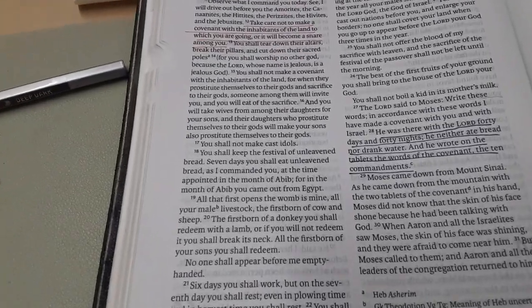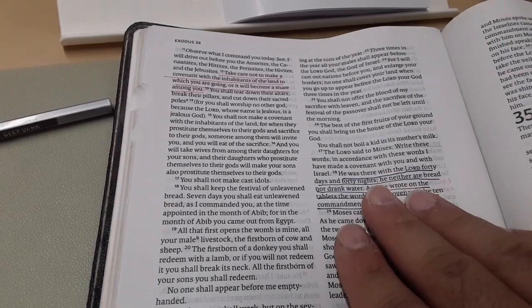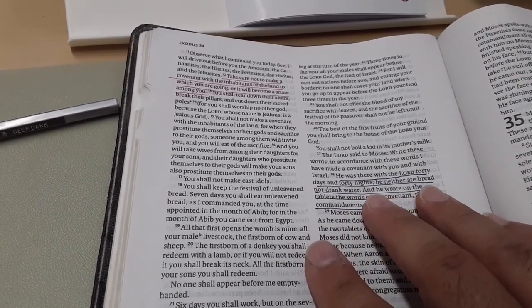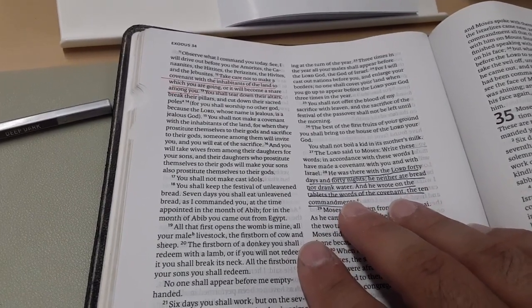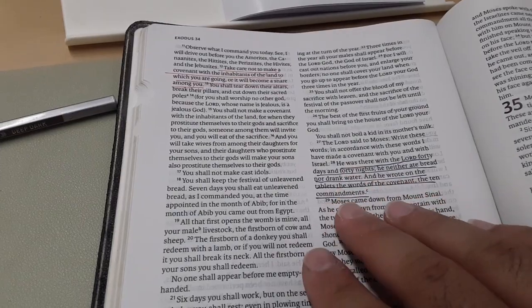So here we have two examples. Again, purple is messianic covenant foreshadowing. So it says that Moses was on the mount for 40 days and 40 nights. He neither ate bread nor drank water. And he wrote the tablets of the words of the covenant, the 10 commandments.